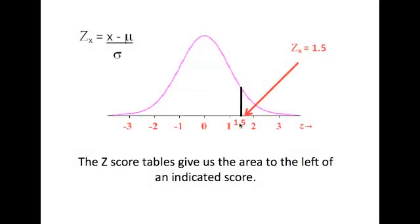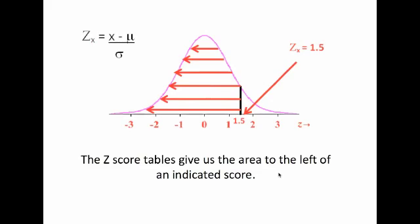Of course, if a given data is 1.5 standard deviations above the mean, then its Z-score is going to be 1.5. Now, the Z-score tables give us the area to the left of a Z-score that we're looking at. And that's going to be another lesson down the road, but you're going to find the areas under this curve.